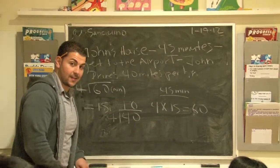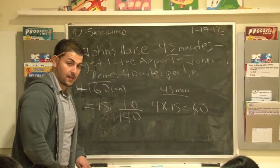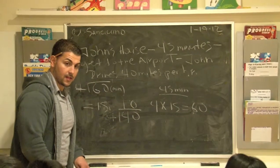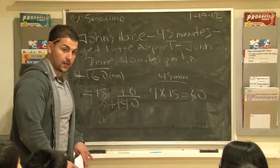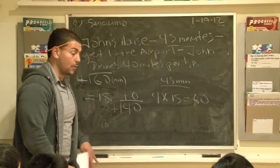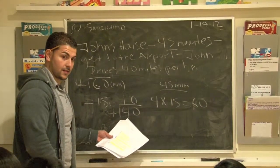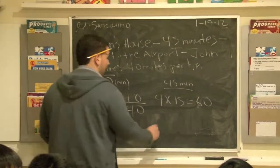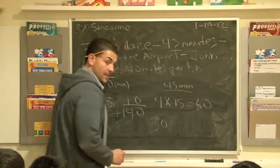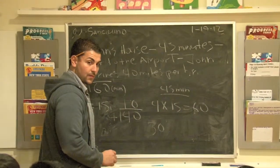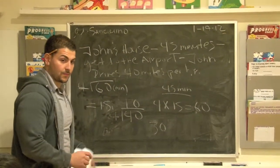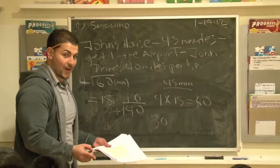So, because we have 45 minutes, which we already established is 3 fourths of 60, we get 3 fourths of 40, which is 30. Very good. And that 30 is how many miles he traveled, because they're 40 miles per hour. Pretty cool, right? Yeah. Hi, everybody.